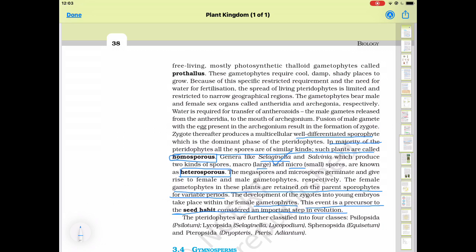The pteridophytes are further classified into four classes. The pteridophytes have four classes. First, Psilopsida, example Psilotum. Second, Lycopsida, which is Selaginella. Third, Sphenopsida, example Equisetum. Fourth, Pteropsida, example ferns and pteris. So, learn the four classes name and at least one example of each.